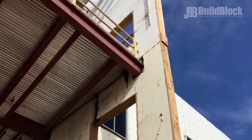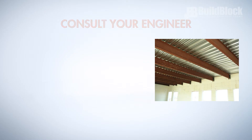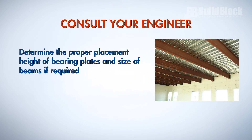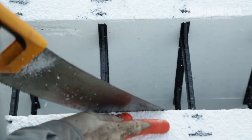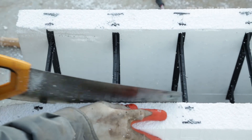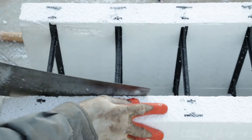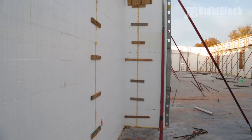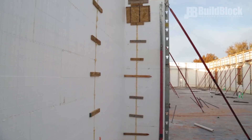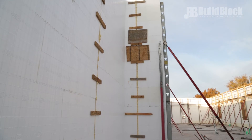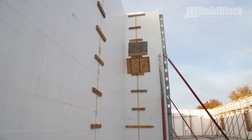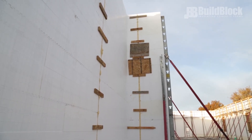Beam pockets are also common in some designs. Consult your engineer to determine the proper placement height of bearing plates and size of beams if required. Cut out foam and web ties to accommodate the bearing plate. You will need to brace the backside of the beam pocket as well with 3/4 inch plywood or 2x4 scabbing. This will help support the back foam panel if the web ties are cut through.